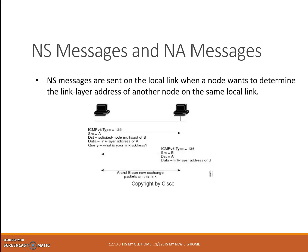The NS message also includes the link layer address of the source node, Node A. After receiving the NS message, the destination node, Node B, sends an NA reply message. The source address in the NA message is the IPv6 address of Node B, and the destination address in the NA message is the IPv6 address of Node A, which sent the NS message.